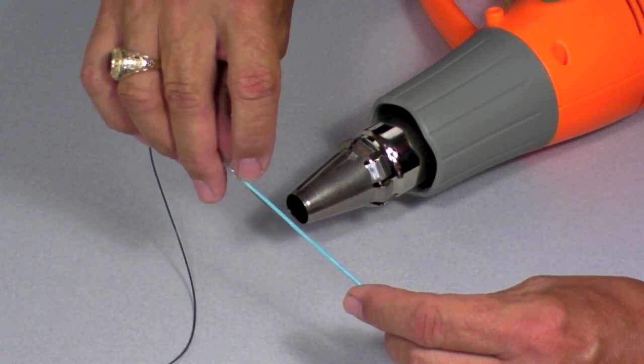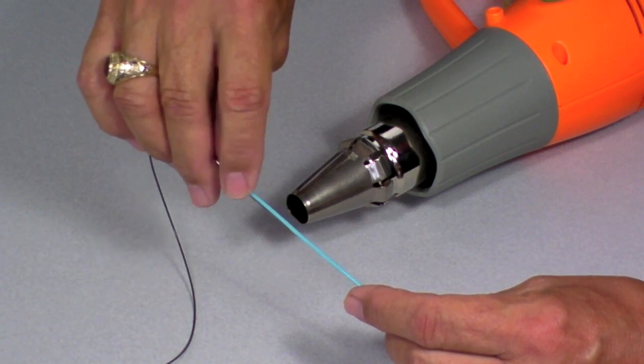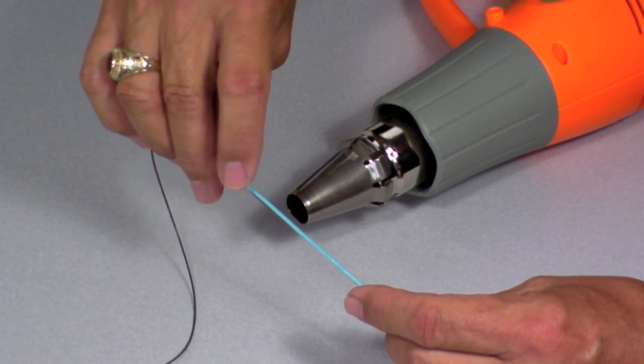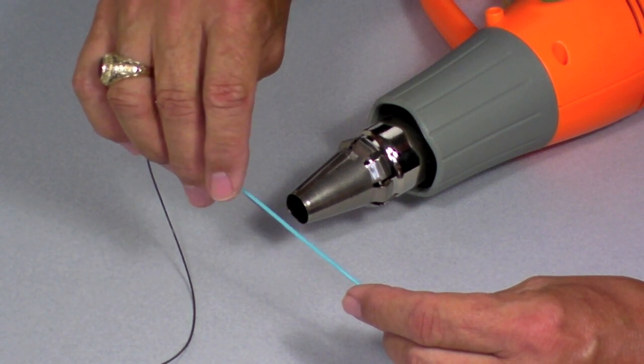So I'll heat this from the backside, just to give a little bit of extra heat to the floater, and then I will roll this afterwards to smooth it out.